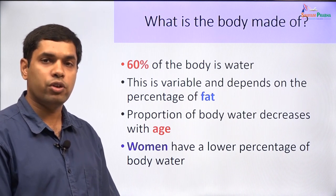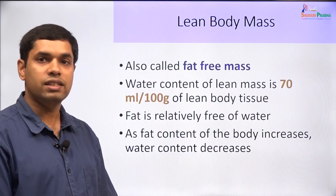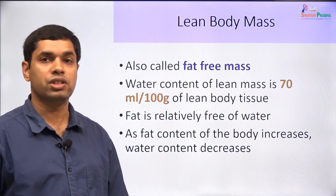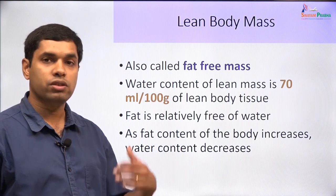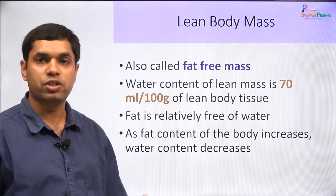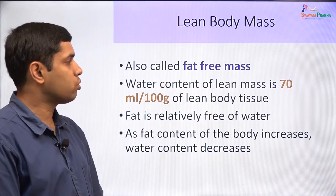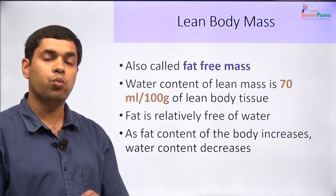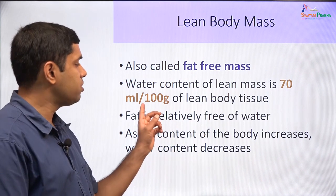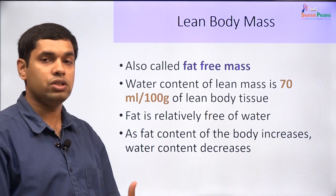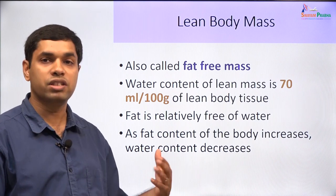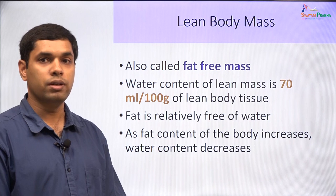Since we are talking about body fat, there is a term we need to discuss: lean body mass. Lean body mass is the mass of a person without fat — we take the total weight of a person, calculate the fat content, and the mass without that fat is called the fat-free mass or lean body mass. The water content of a person's lean body mass is 70 ml per 100 grams of lean body mass, or 70% of the lean body mass. As the fat percentage increases, the proportion of body water decreases.